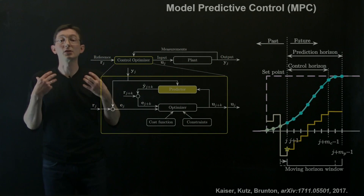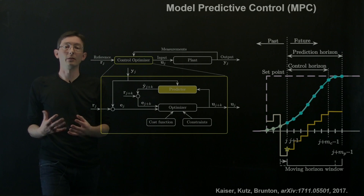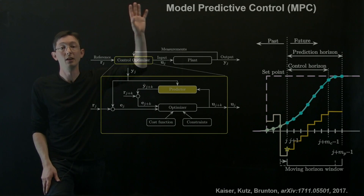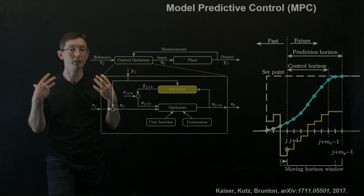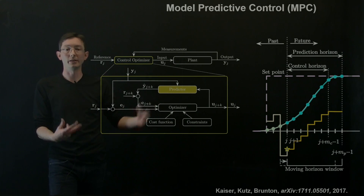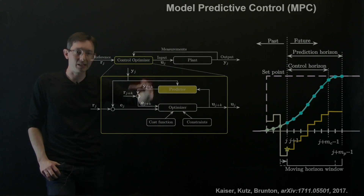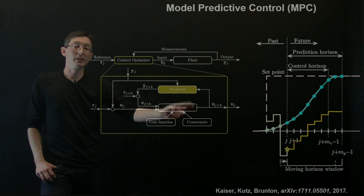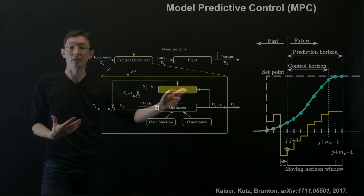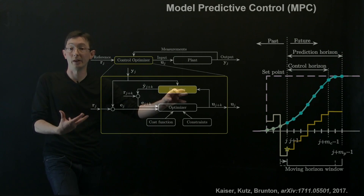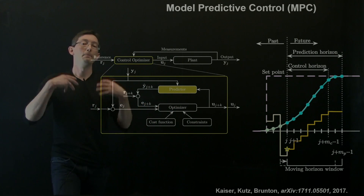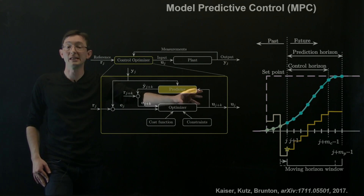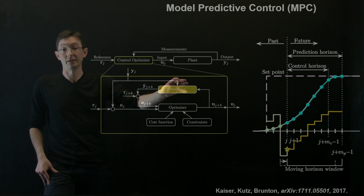Model predictive control is extremely flexible and very powerful. This is the industry standard advanced process control because it's so flexible and you can include constraints; you can do this for non-linear systems. In the past, because this optimization was run at every time step, this was pretty expensive, and so often it was only feasible for linear or linear parameter-varying models. But as computers are getting faster and faster, it's getting more and more feasible to use non-linear models in this predictor step.